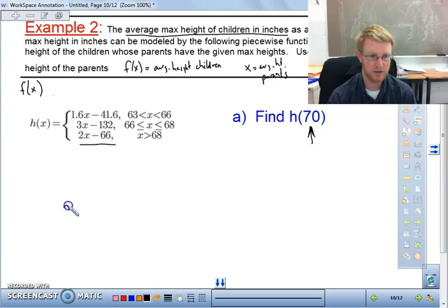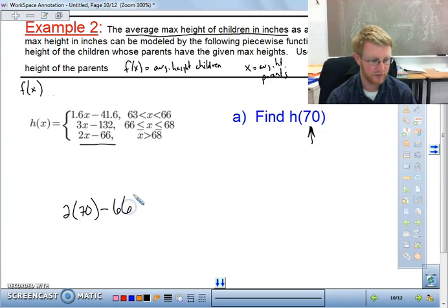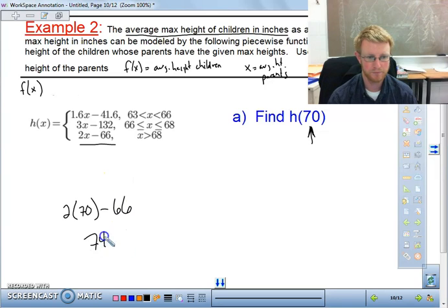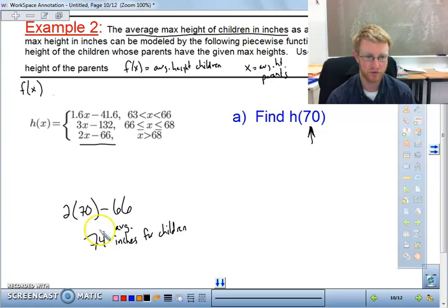So we simply take 70 and go 2 times 70 minus 66, and we'll get our value. So that ends up being 74 inches, or sorry, we're going to say average inches for the child. And that answers the question.